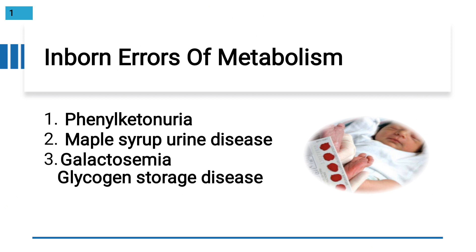We are going to discuss four different diseases: first is phenylketonuria, then maple syrup urine disease, then galactosemia, and then glycogen storage disease. Inborn errors means that from birth, the infants have errors in their metabolism that they are facing.